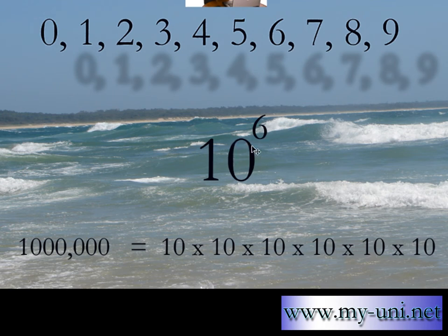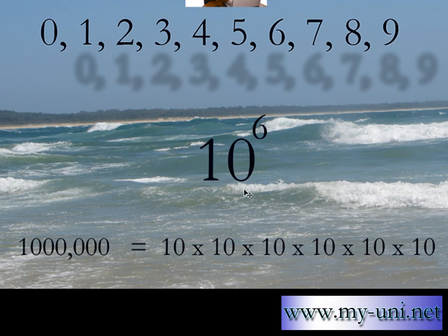Why is it 10 to the power of 6? Because it is 10 multiplied by itself 6 times: 10 × 10 × 10 × 10 × 10 × 10. A huge quantity such as 1 million can be represented with just three symbols.